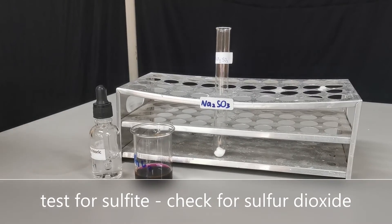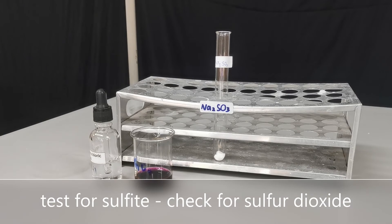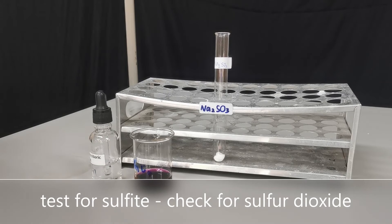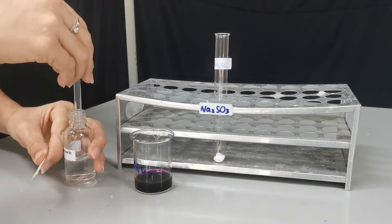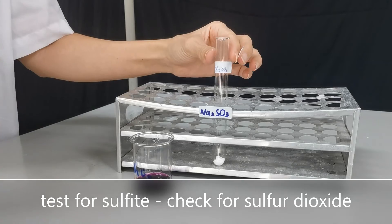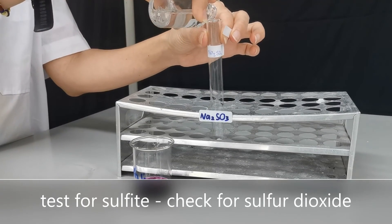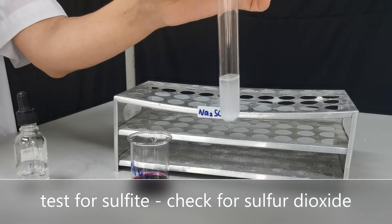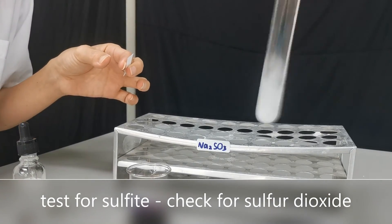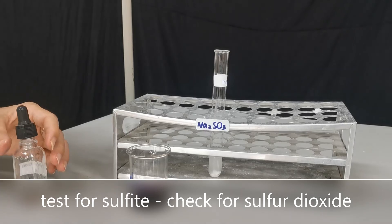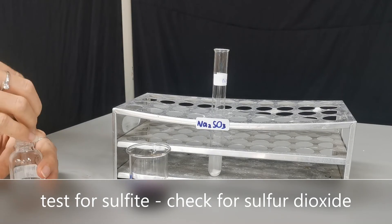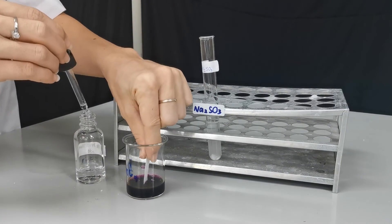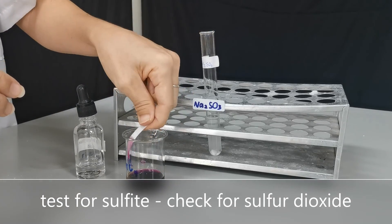The next test we're going to do is the test for sulfur dioxide gas, and we can produce sulfur dioxide gas by reacting a sulfide salt with hydrochloric acid. So in this experiment, I'm using sodium sulfide. To test for sulfur dioxide, we need acidified potassium manganate.